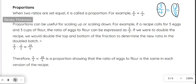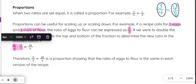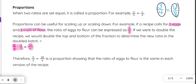Proportions can be used oftentimes for scaling up or scaling down. So for example, if we had 5 eggs and 3 cups of flour, the ratio of eggs to flour would be expressed as 5 over 3, 5 to 3. If we were doubling the recipe, we would double the top and we would double the bottom of the fraction to determine the new ratio in the double batch. So we would see 5 thirds and we would multiply by 2 on top and multiply by 2 on bottom to get our new ratio of 10 over 6.